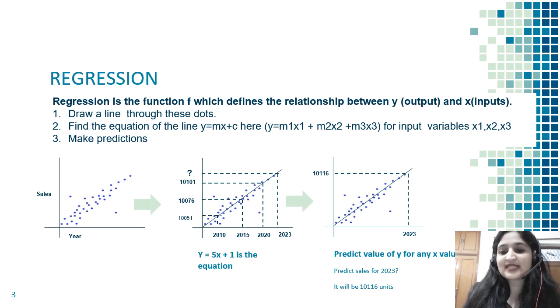Let's see the first graph. We're trying to predict sales using year as the input variable. These dots are the year-sales data points for a particular year. In the second graph, I'm trying to find the relationship between y, which is sales, and x, which is year.